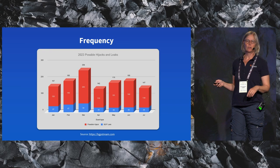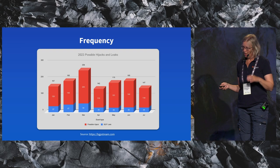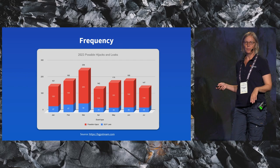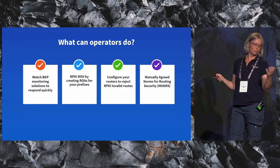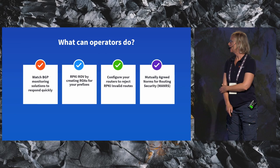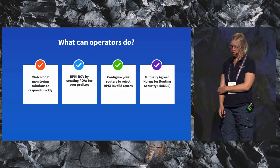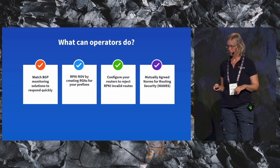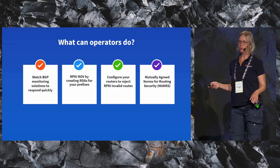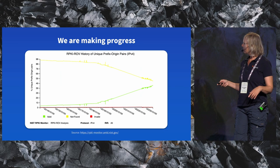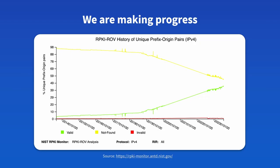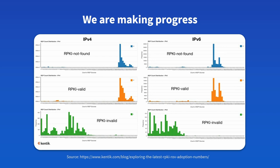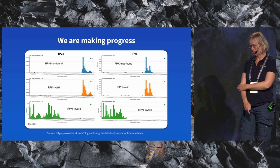It happens, and it happens a lot. Here are some statistics from Doug's work, where we see potential hijacks or BGP leaks in general. As I was talking about last year, the tool that can be used right now is RPKI route origination validation. Create ROAs, protect your space — even the space you're not using — so it cannot be squatted. And then reject the invalid routes. We want to call out MANRS for the great work they're doing. We are making a lot of progress, and we see how the propagation of prefixes which are invalid is way less today than valid and not-found prefixes, and that goes for both protocols.